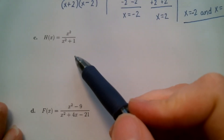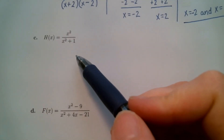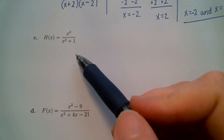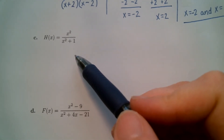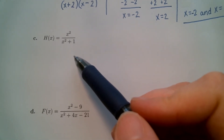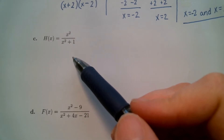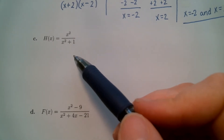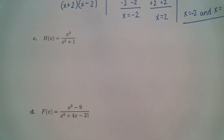In example C, our function is h of x equals x squared over x squared plus one. The first thing we want to do is try to factor and cancel. When I look at the top, there is nothing I can really do to it.